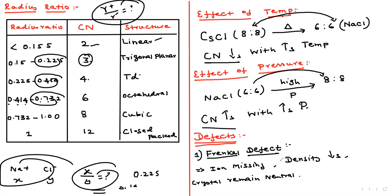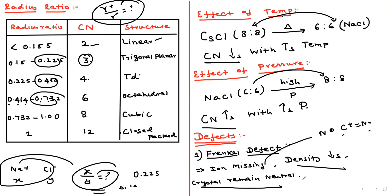What is the Frenkel defect? It is when a cation is missing from its lattice site — the number of cation vacancies equals the number of cations displaced. The crystal remains electrically neutral and charge balance is maintained. However, density decreases because an ion is missing from the lattice.